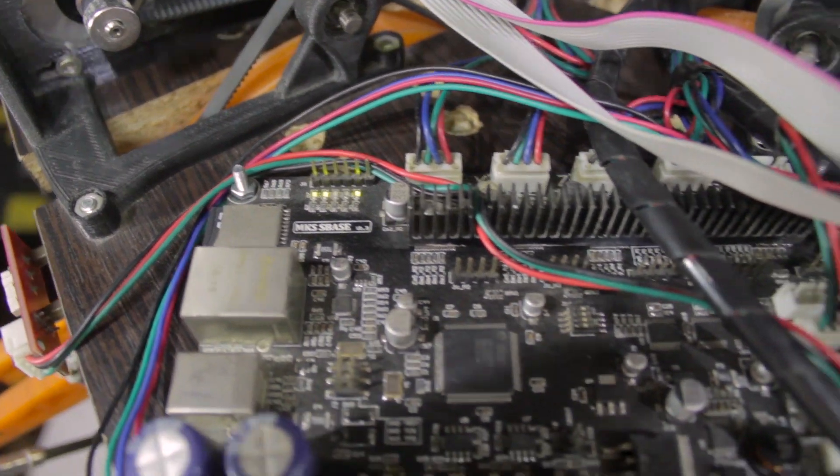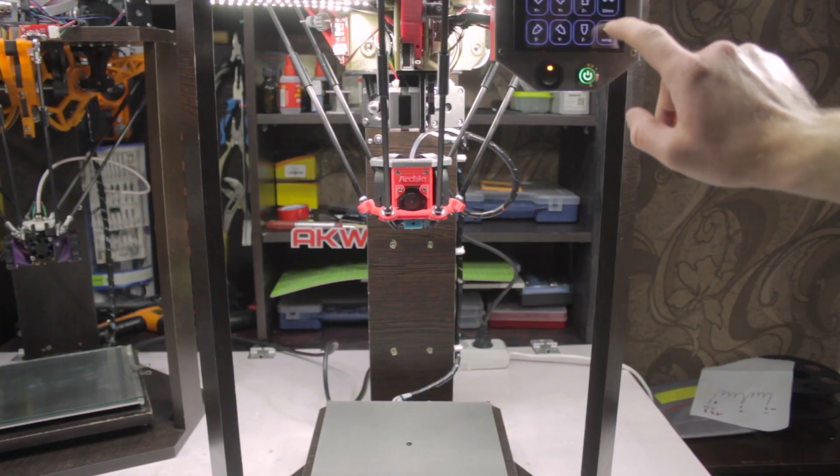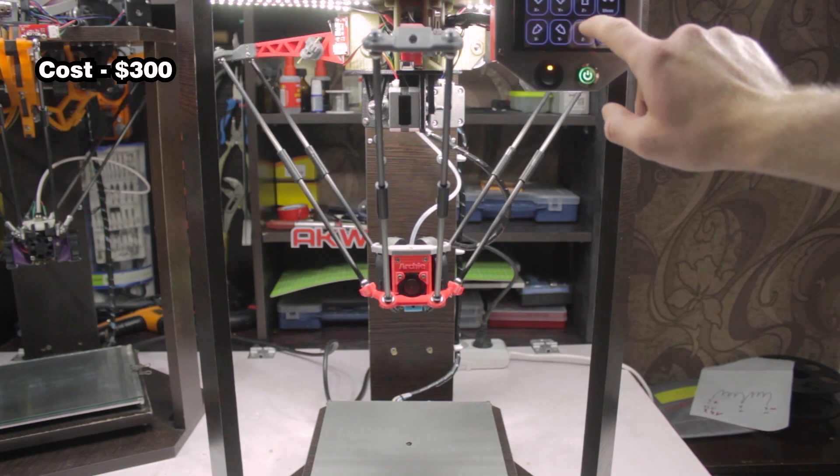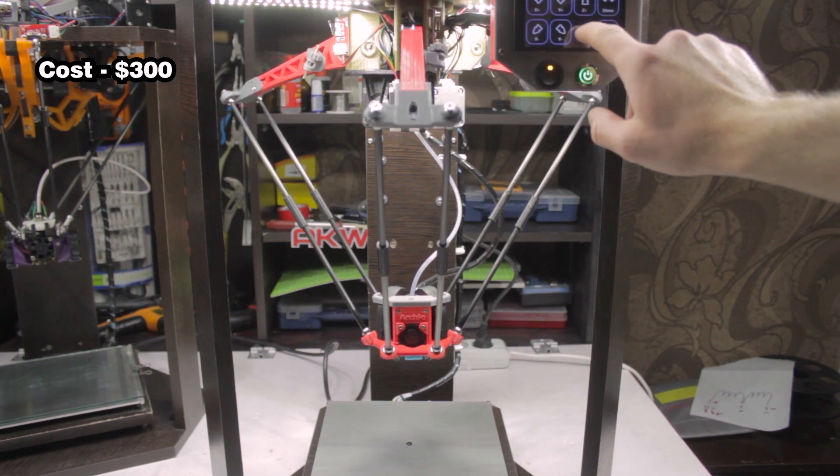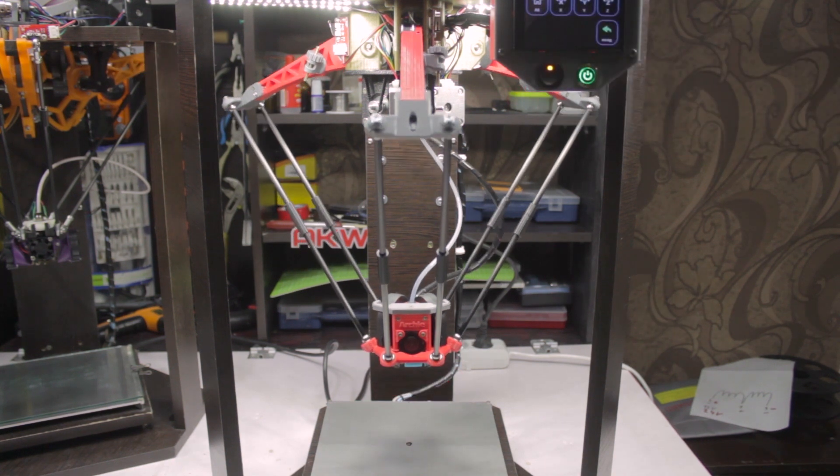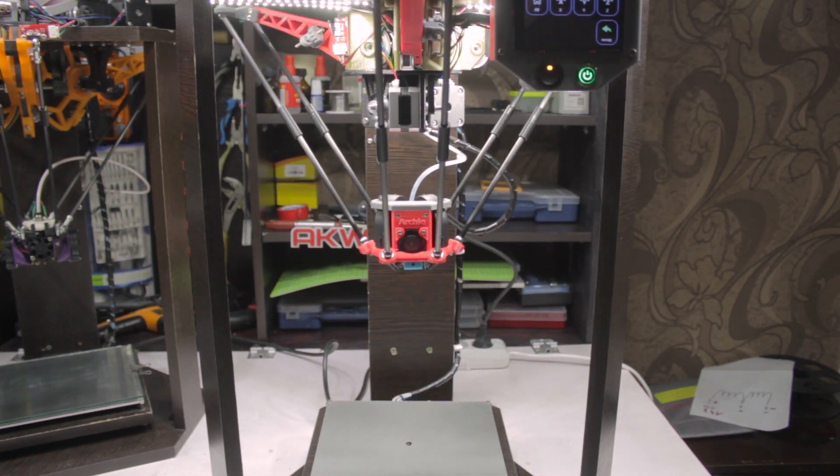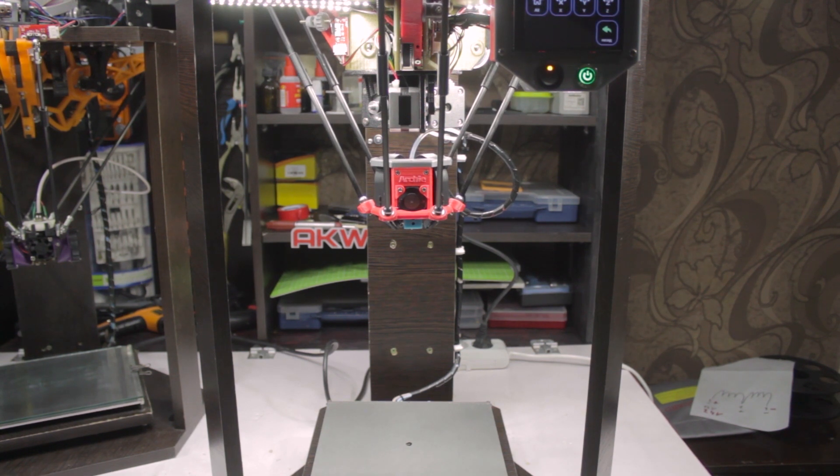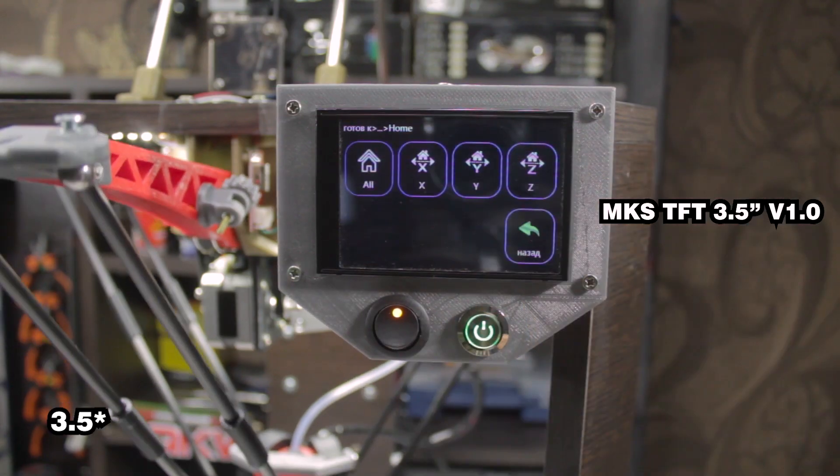The second is cheapness. The first version will cost about $180. This is taking into account the MKS S base control board, which is not cheap. The second version cost me about $280. Well, let it be $300 with a margin.